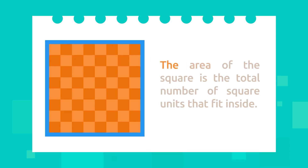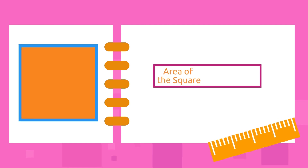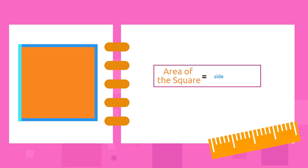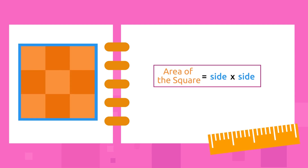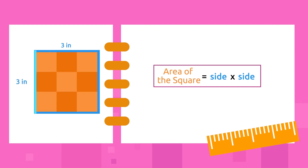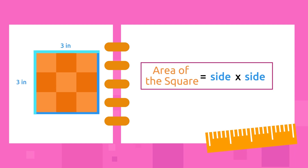We measure its surface in square inches, square feet, or square miles. As you can see in this picture, the area of the square is the total number of square units that fit inside. To calculate the area of the square, we use the following formula: the area of a square is equal to multiplying one side by another.